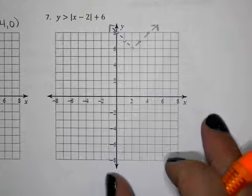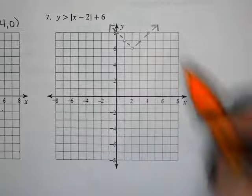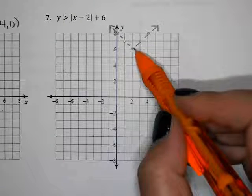Okay, for number seven, let's say you have looked at the graph. You knew that the vertex was positive two, positive six.